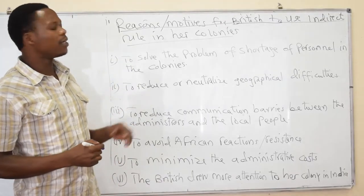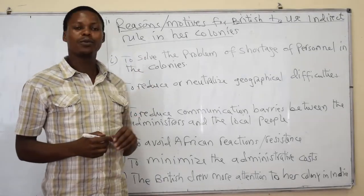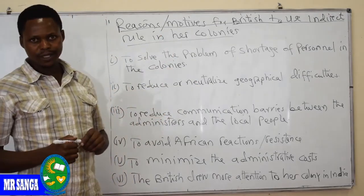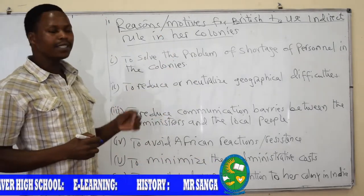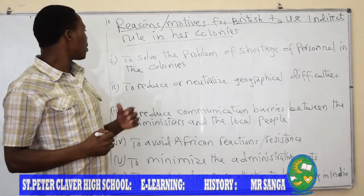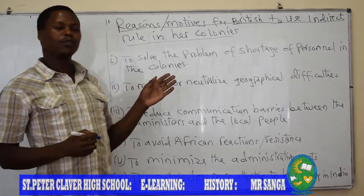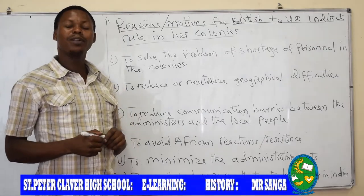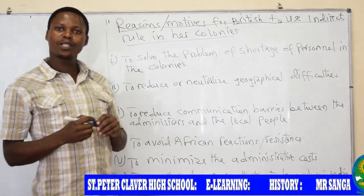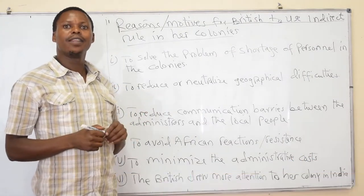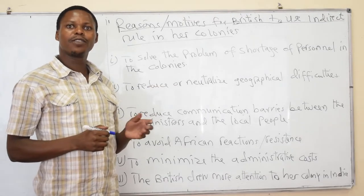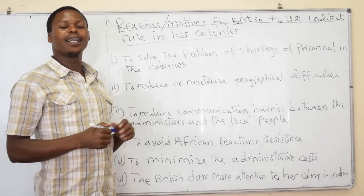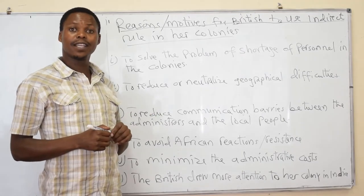Another part is the reasons or motives for the British to use Indirect Rule in their colonies. The first reason or motive was to solve the problem of shortage of personnel in the colonies. The British had few personnel to administer their colonies; therefore, the chiefs were highly needed to assist them in running different activities.